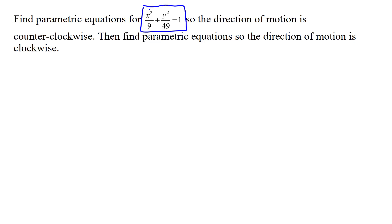Whenever you want to parameterize ellipses or circles, which are just special forms of ellipses, we're going to use the parameterization x equals something cosine t and y equals something sine t.